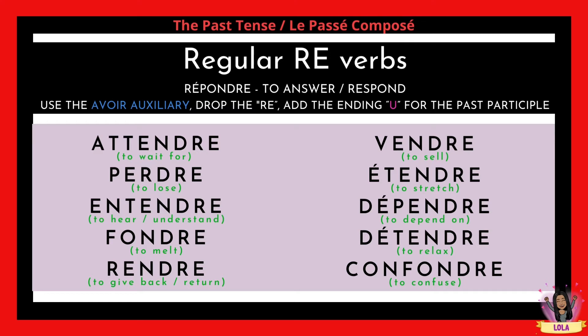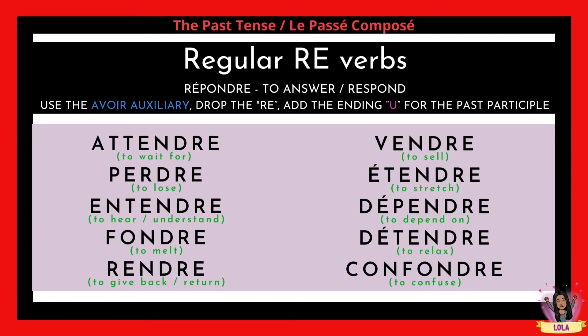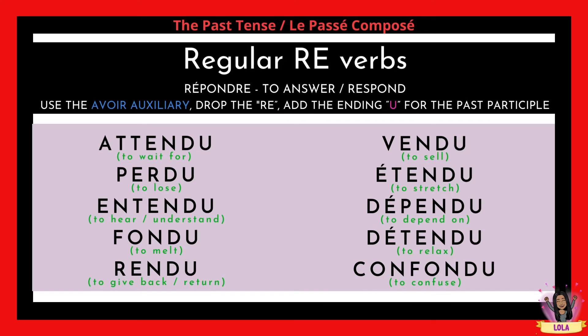And confondre (to confuse). When we change them to past participles they become: attendu, perdu, entendu, fondu, rendu, vendu, étendu, dépendu, détendu, and confondu. All those RE endings change to U, and now they are your past participles.